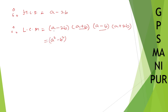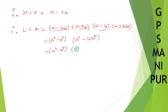And (a minus 2b)(a plus 2b) can be written as a square minus 4b square. So the LCM is (a square minus b square)(a square minus 4b square). That's the HCF and LCM. I hope the answer is correct. Thank you so much, we will meet in the next video.